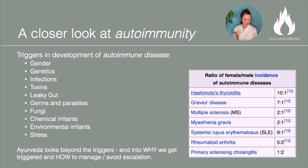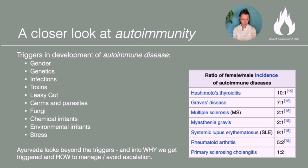Germs and parasites present in the system are constantly triggering and imbalancing your immunity. Also fungi, chemical irritants — household cleaners, environmental irritants. And last but not least, stress. Stress is perhaps the biggest factor in the development of autoimmune disease.